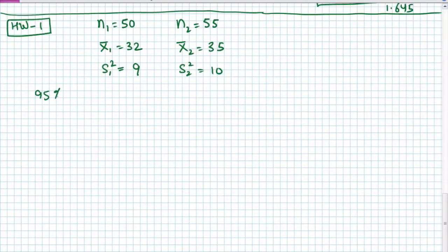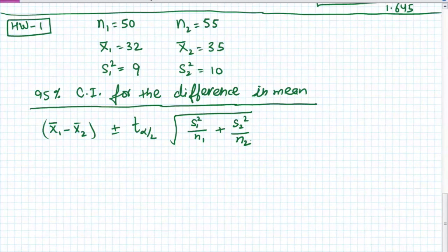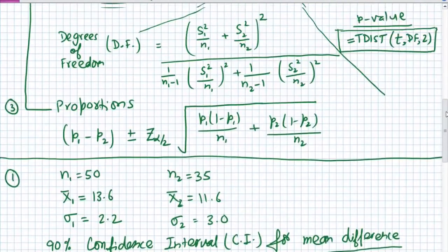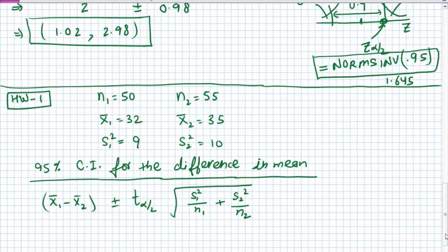If we develop a 95% confidence interval for the difference between the means when sigma 1 and sigma 2 are not known, we use the second formula. In this equation the only thing we don't know is t alpha by 2, so let's do that calculation. Looking at the degrees of freedom formula, s1 squared over n1 and s2 squared over n2 are each used twice. We can use those values to quickly compute the degrees of freedom.